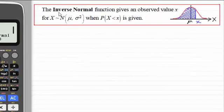The inverse normal function gives an observed value x for a random variable X following a normal distribution with mean mu and variance sigma squared, where sigma is the standard deviation, and the probability of being less than the observed value x is given, as you can see here in this sketch of the normal distribution.